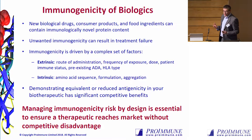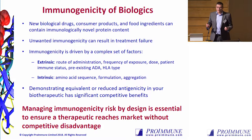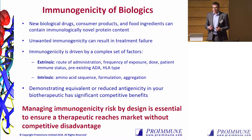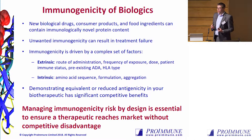I'm not going to spend much time on the introductory slides because you've already heard quite a bit from previous speakers, particularly Isabel. As we know, new biological drugs — particularly antibody therapeutics, but also pretty much any proteinaceous molecule — can actually contain immunologically novel sequences which the immune system can respond against. In the context of biotherapeutics, unwanted immunogenicity can result in treatment failure through the production of neutralizing antibodies. There are a number of different factors that can contribute to that, and there's not a single element which is the main driver of those kinds of responses.